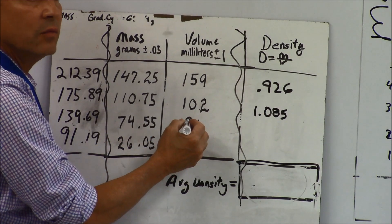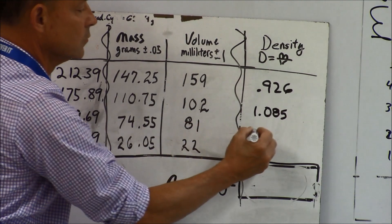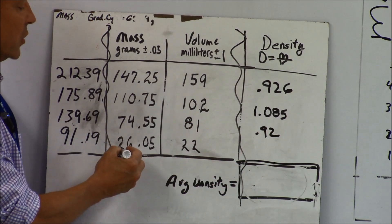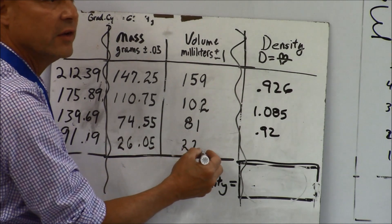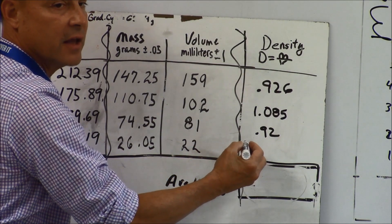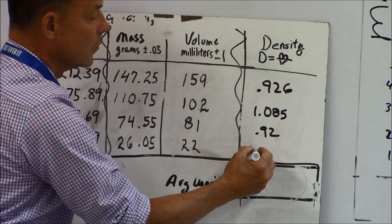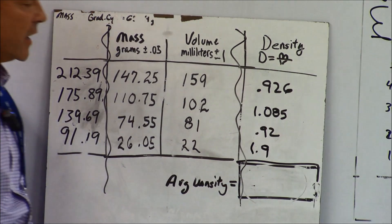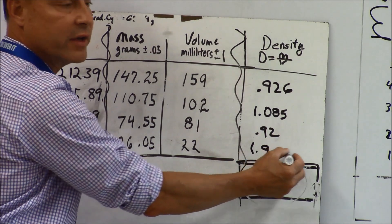And then one more, 26.05 divided by 22. Anybody? Yes, Tyler, one point nine. These probably had more digits on your calculator but you know that when you're calculating you have to limit it to the proper number of sig figs.